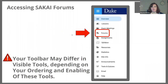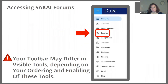To find Sakai forums, you always have to go back to the toolbar. Your toolbar may differ depending on what tools and applications you've included, what template you've chosen, and what you've done to customize it for your own course. But generally it will be on your toolbar page if enabled. Here we have it circled in red. You click on that and when you click on that you get to the next page.